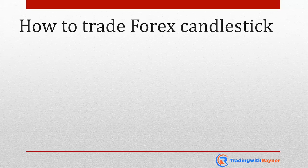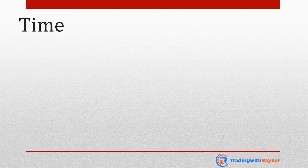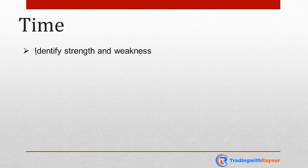Whenever you trade candlestick patterns, I want you to pay attention to two things. Number one is what I call time, and number two is what I call confluence. So often, traders trade candlestick patterns and they only pay attention to the open, high, low, and close — they just pay attention to the candlestick pattern itself, they don't look at time. But if you take into consideration the time element, you realize it gives you a better understanding, a better read on what is the current sentiment of the markets. In fact, it also lets you identify strength and weakness that may not be too obvious to other traders.